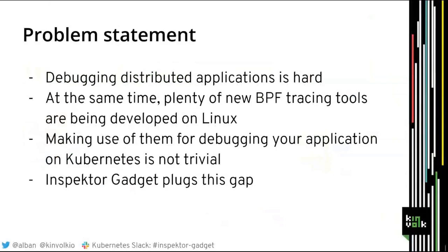I'll describe the problem statement: why do we work on Inspector Gadget? Debugging distributed applications is hard — when you have an application running on Kubernetes and something is wrong, it's difficult to debug. We have many BPF tracing tools on Linux, but being available on Linux doesn't necessarily mean it's easy to use on Kubernetes. The goal of Inspector Gadget is to plug that gap.